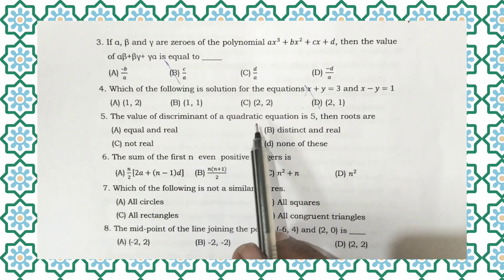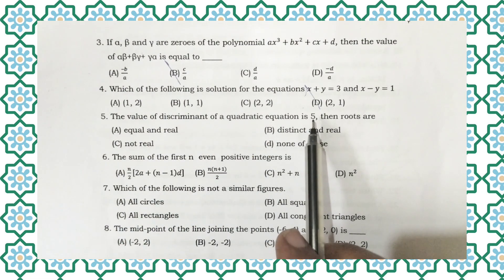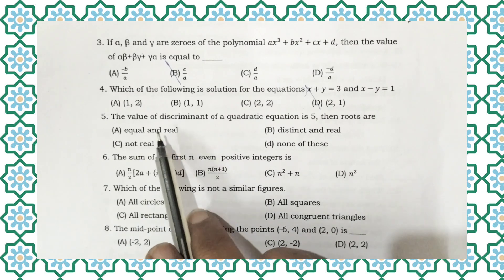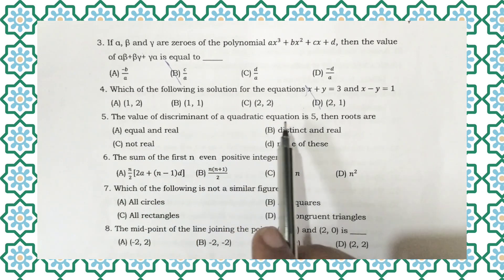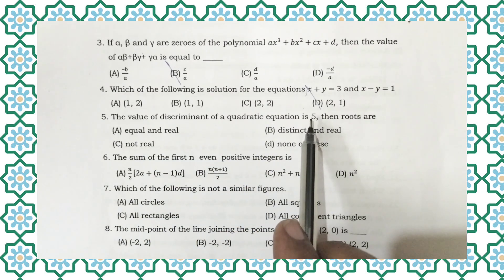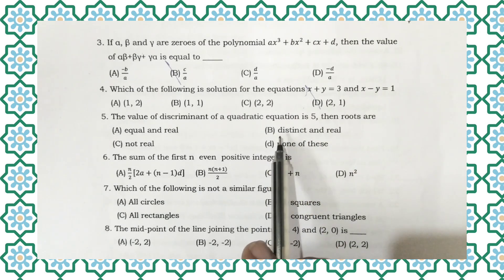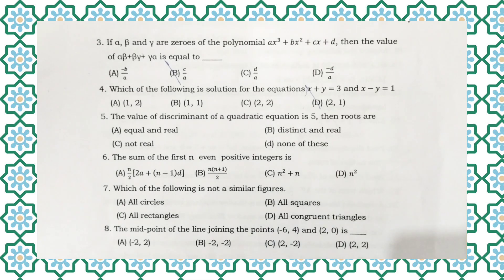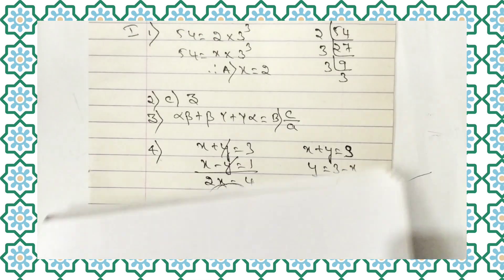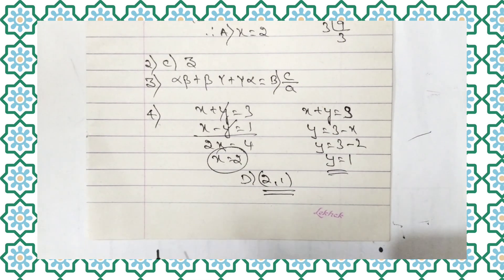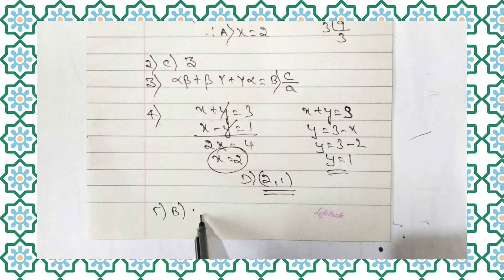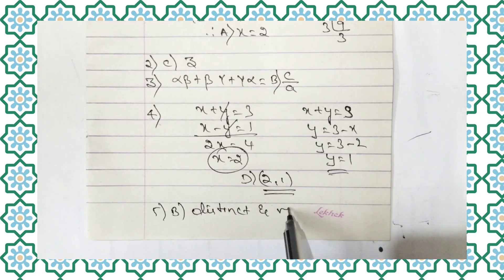Now let us move to question number 5. The value of the discriminant of a quadratic equation is 5. Since 5 is greater than 0, the roots are distinct and real. So for the 5th question, option B is the right answer — the roots are distinct and real.